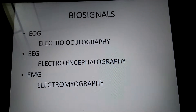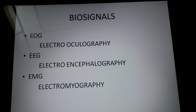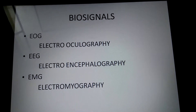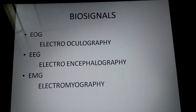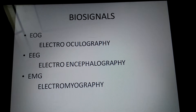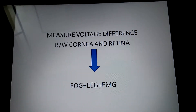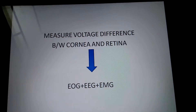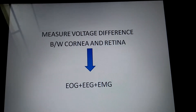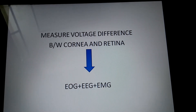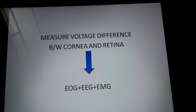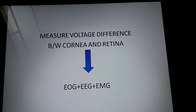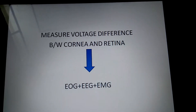EOG is electrooculography. EEG is electroencephalography. EMG is electromyography. Measuring the voltage difference gives the combined value of EOG, EEG, and EMG, which is in between 0.4 to 1 mV.